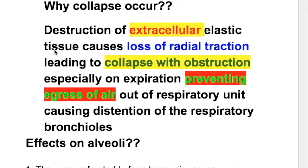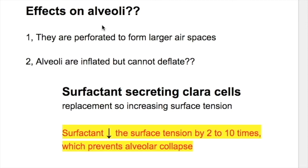Why does collapse occur? Destruction of extracellular elastic tissue causes loss of radial traction, leading to collapse with obstruction especially on expiration, preventing egress of air out of the respiratory unit. This causes distension of the respiratory bronchioles. Loss of elastic septa leads to collapse during expiration and eventual distension of the bronchioles.